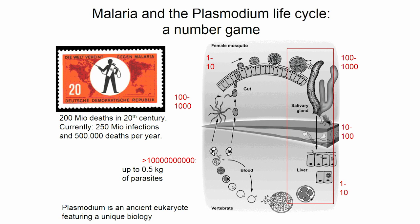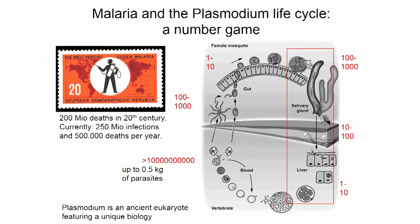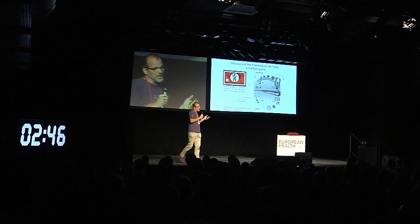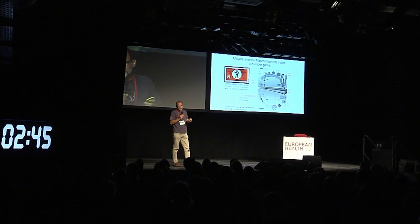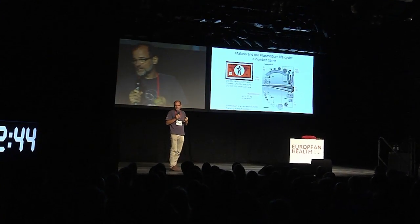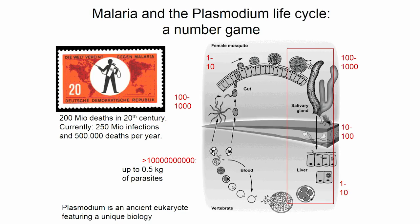We're mostly interested in the malaria parasite. That parasite causes malarial disease when it replicates in red blood cells, and it can grow to up to half a kilogram of parasitic mass in some unfortunate patients. Most of us would die much earlier with much lower numbers of parasites.